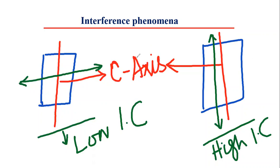In this way, the cutting direction of a mineral affects its interference color. If the cutting direction is perpendicular to the C axis, the mineral grain will give low interference color. If the cutting direction is parallel to the C axis, the same mineral grain will give high interference color.